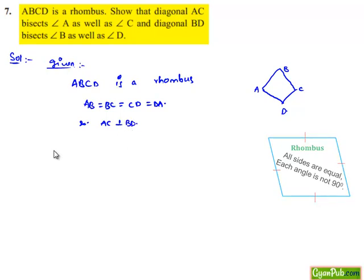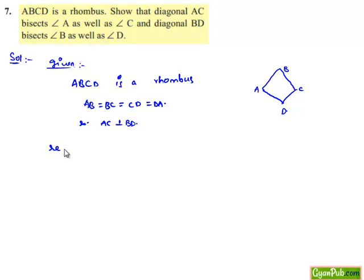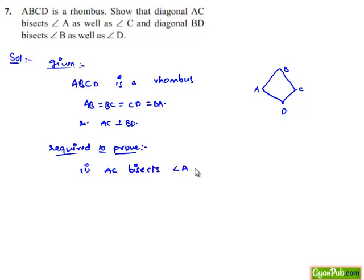Now we are required to prove: firstly, AC bisects angle A and angle C, and secondly, BD bisects angle B and angle D.